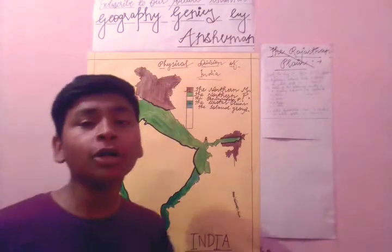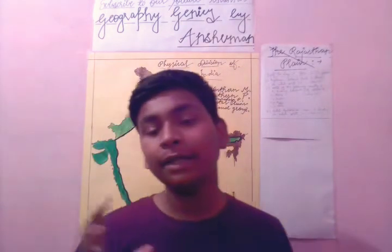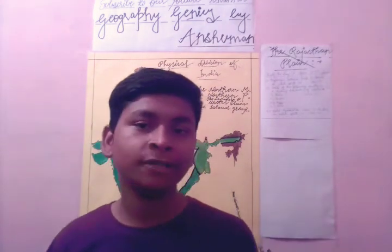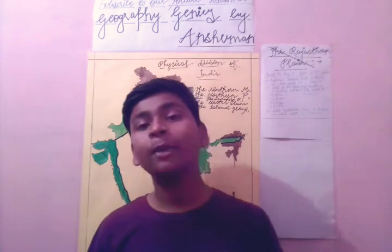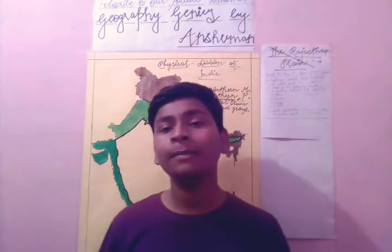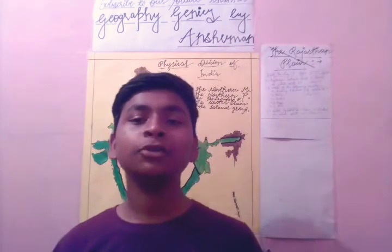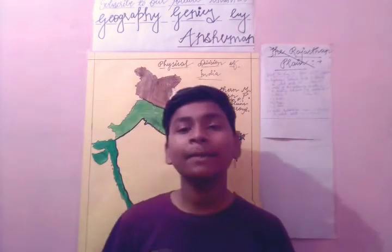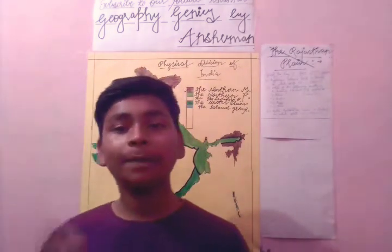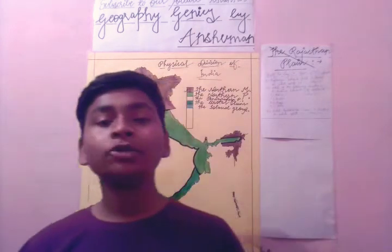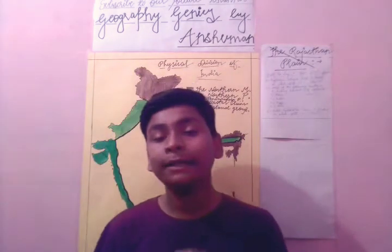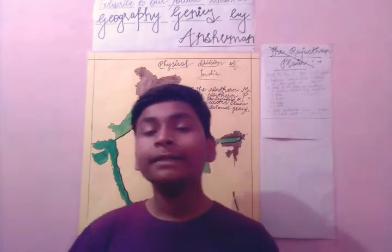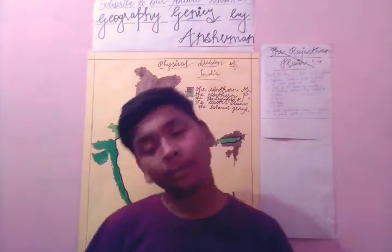Today we are going to talk about the parts of the Northern Plain. In my earlier video I mentioned there are four parts of the Northern Plain, just like the Northern Mountains have four parts — Himadri, Himachal, Shivalik, Purvanchal. The Northern Plain also has four parts: Rajasthan Plains, Ganga Basin, Indus Basin, and Brahmaputra Valley. In this video we are going to talk about Rajasthan Plains and Indus Basin, and in our next video we will talk about Ganga Basin and Brahmaputra Valley.